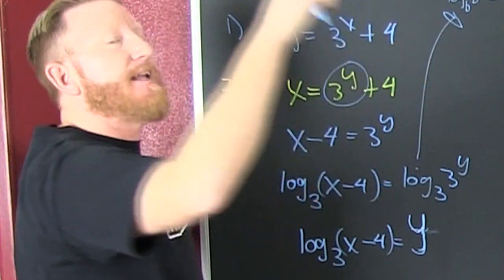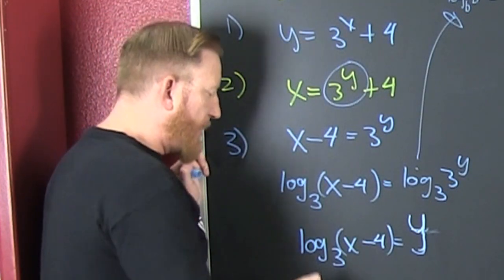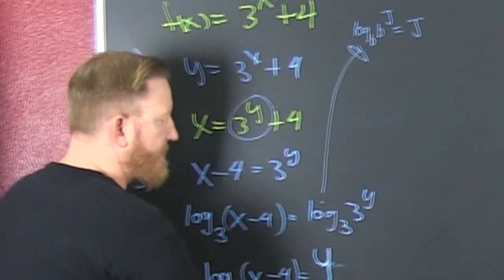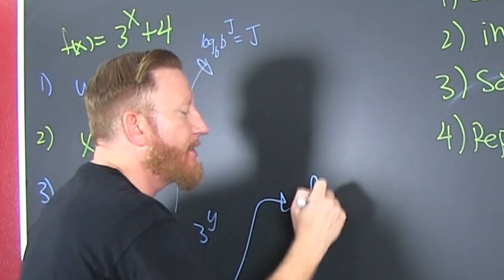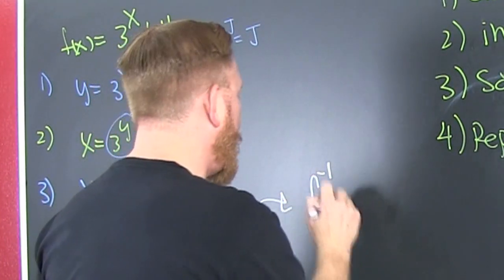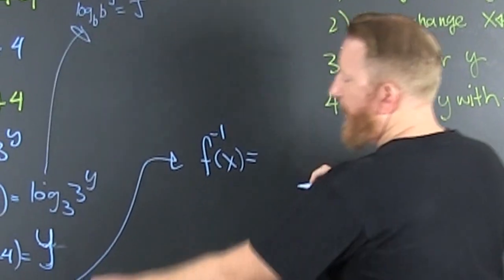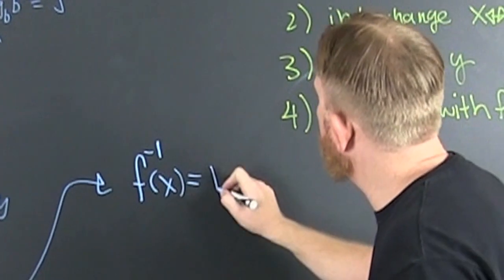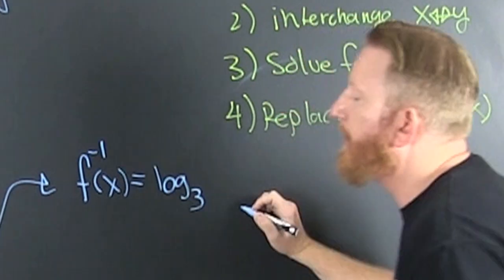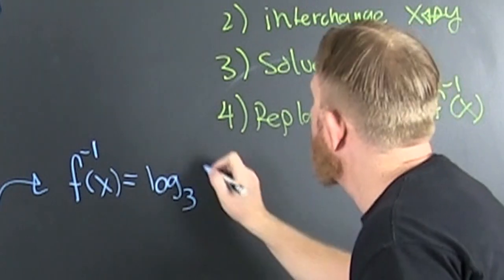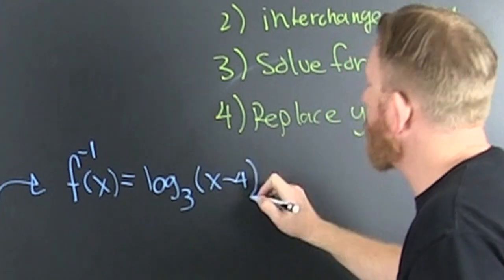That's the last step: replace our y with our f inverse. So then I see that my f inverse of x is going to be log base three of x minus four.